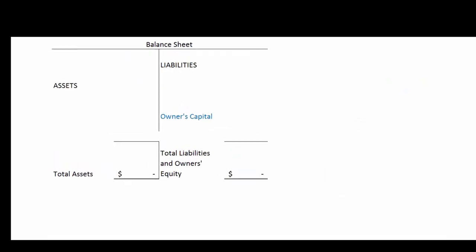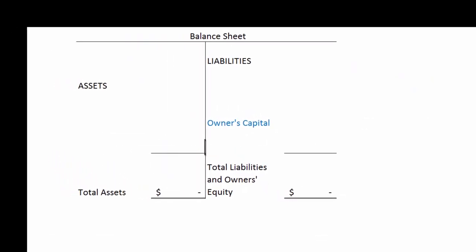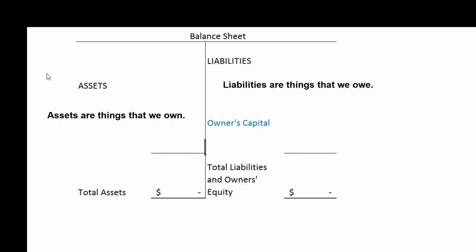We've looked at the balance sheet for a sole proprietorship many times. On the left hand side are our assets — things that we own like cash, accounts receivable, land, building, and equipment. On the right hand side are two kinds of accounts: liabilities, which are things that we owe, and owner's capital, which is what we own minus what we owe. This is the only owner's equity account we've talked about so far.